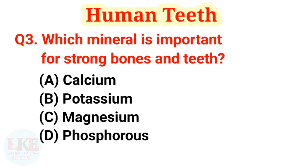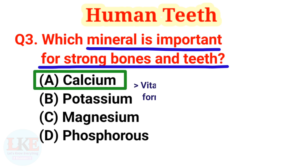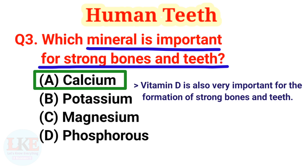Question number 3: which mineral is important for strong bones and teeth? Options: A) calcium, B) potassium, C) magnesium, D) phosphorus. The right answer is option A, calcium. Remember, like calcium, vitamin D is also very important for the formation of strong bones and teeth.